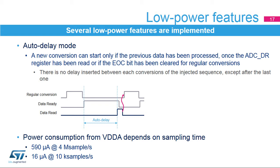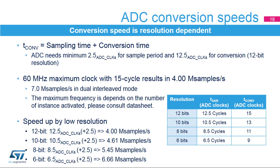Power consumption from the VDDA power supply depends on sampling time, ranging from 16 microamps at 10 kilo samples per second to 590 microamps at 4 mega samples per second. For low sampling rates, current consumption is reduced almost proportionally. The global conversion time equals the sampling time plus the conversion time. The ADC needs a minimum of 2.5 clock cycles for sampling and 12.5 clock cycles for conversion in 12-bit mode. With a 60 MHz ADC clock, it can achieve 4 mega samples per second.